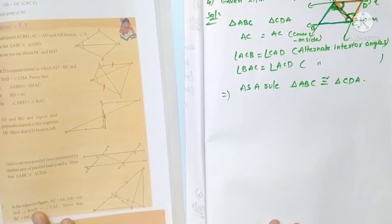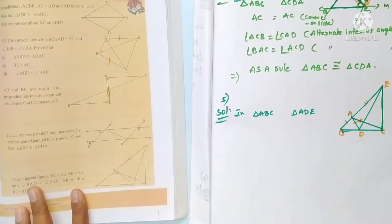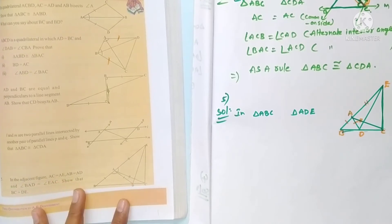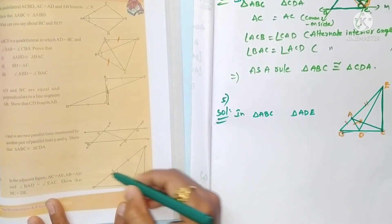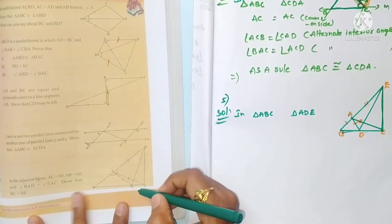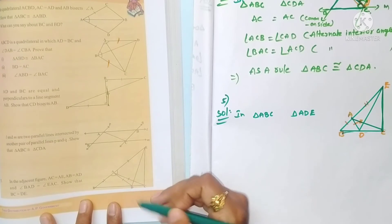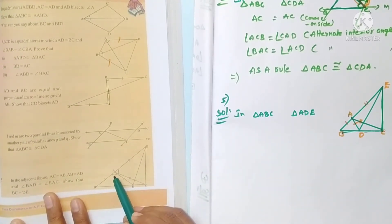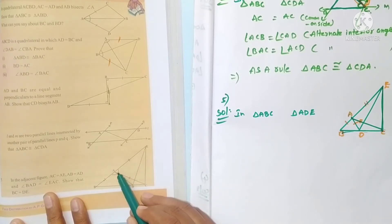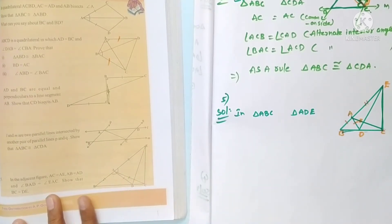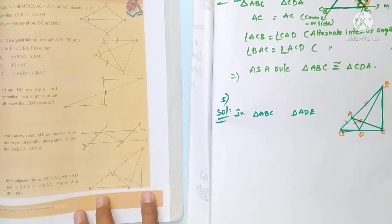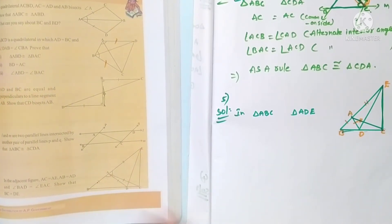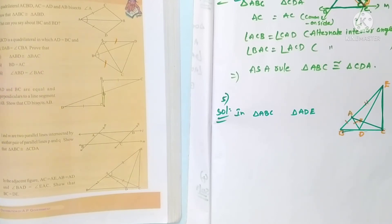Fifth problem: In the adjacent figure, AC is equal to AE, AB is equal to AD, and angle BAD is equal to angle EAC. We have to show that BC is equal to DE. Just observe the figure carefully. The triangle on one side is ABC and on the other side is ADE. We will compare these two triangles.